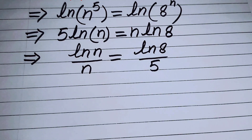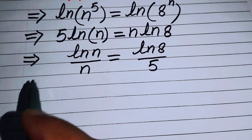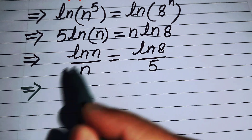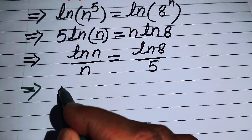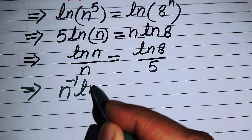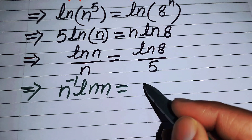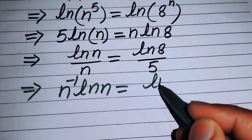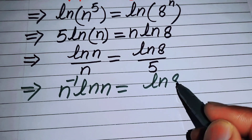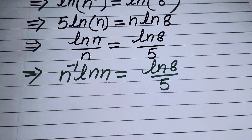In the next step, we move n to the denominator on the left-hand side so that it looks like: n⁻¹·log(n) = log(8)/5.